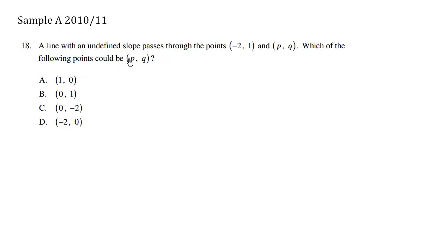A line with an undefined slope passes through the points (-2, 1) and (p, q). Which of the following points could be (p, q)? Now the key word here is undefined slope.